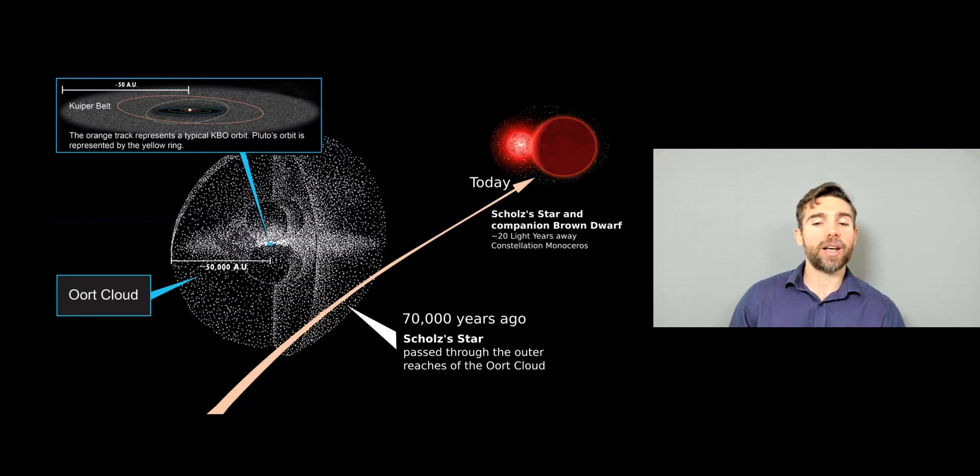But it passed through the outer parts of the Oort cloud. So it actually passed through this outer Oort cloud. And that has sent comets to the inner part of the solar system. So some of the long period comets we're seeing now are a direct consequence of this star passing nearby to our solar system.